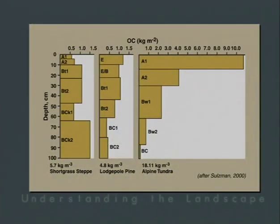The next example from Jenny's model is a biosequence, evaluating variations in vegetation type and the properties they impart on the system — specifically soil carbon. The y-axis shows soil depth in centimeters and the x-axis shows organic carbon content in kilograms per square meter for three systems. Short grass steppe vegetation has about 5.7 kg/m³ of carbon, lodgepole pine has 4.8 kg/m³, and alpine tundra has 18.1 kg/m³ — a very large difference produced by different vegetation types.